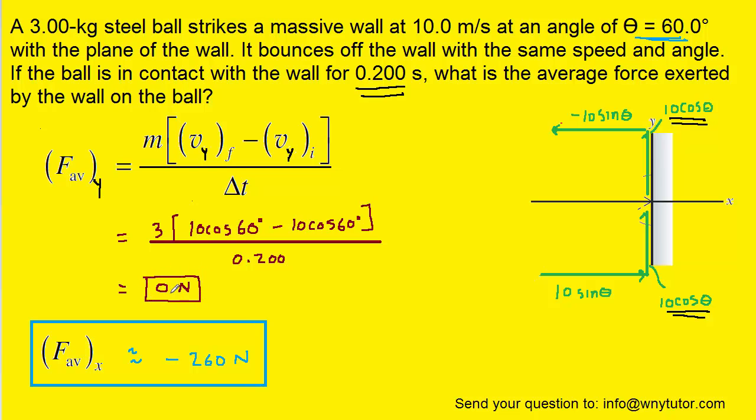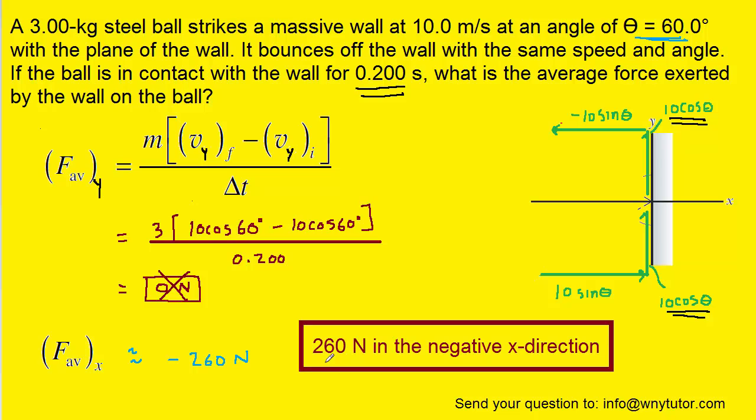So, now we just have to figure out how to report our final answer. And since there's no force in the y direction, we don't have to worry about it. The final answer will, therefore, be 260 newtons in the negative x direction. Recall that it's in the negative x direction because when we calculated the average force in the x direction, we got this negative sign. So, that means the average force overall is pointing in the negative x direction. And, indeed, that will be the final answer.